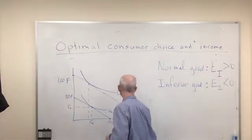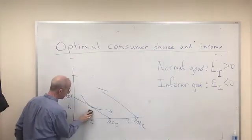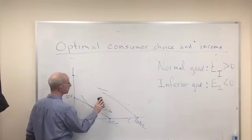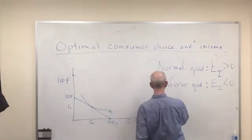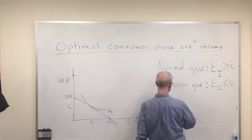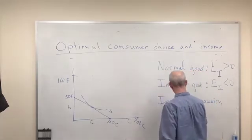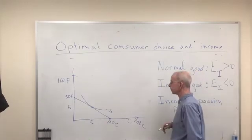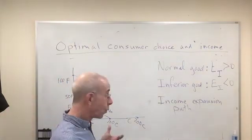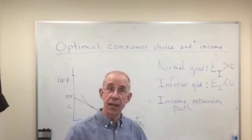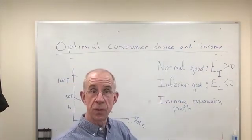One final thing. There's a bit of terminology that we will introduce here of something called the income expansion path. How does income change what happens to the combination of choices of these two goods?